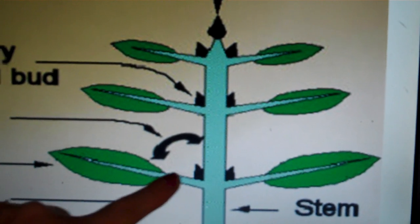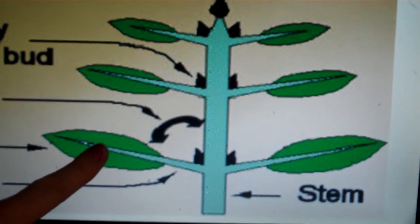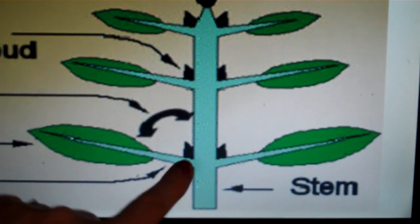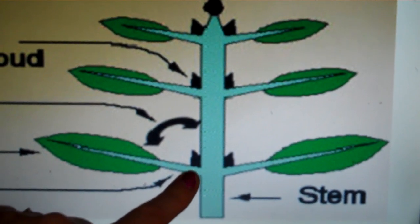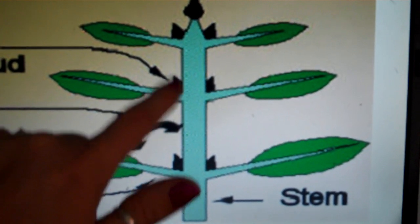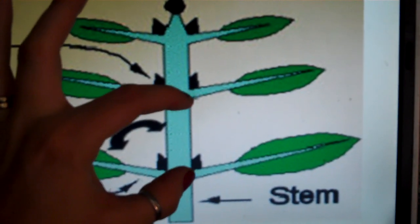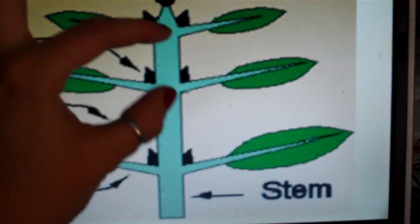The area where the petiole grows out of the stem is called a node, so this area here would be the node. The area in between nodes is called an internode, so this region here would be an internode.